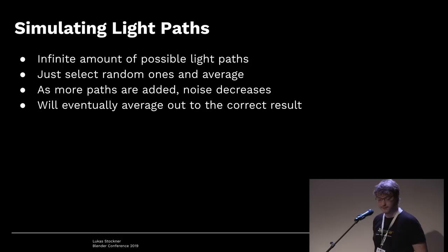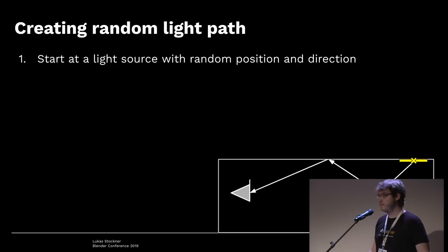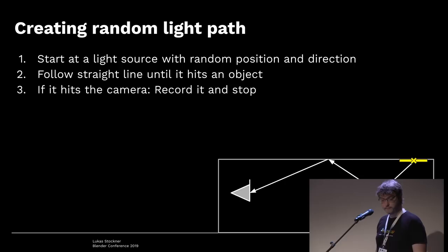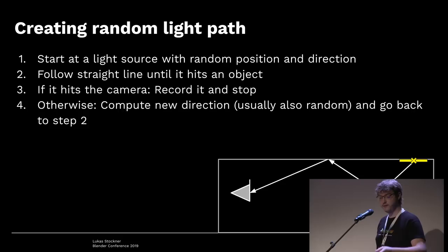How do we create random light paths? We start at the light source, pick a random position, pick a random direction in which it leaves, and follow a straight line. In this example we end up at a sphere, so we bounce off, compute a new direction based on the material, continue — then we hit the ceiling, bounce again, and finally in this example we hit the camera. Path of length three, done.